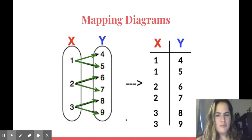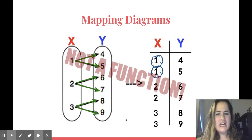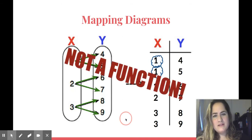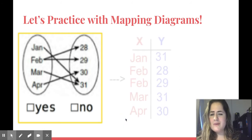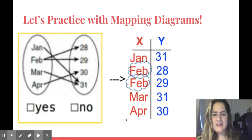So if the rule is X can't repeat, if I have two arrows coming out of X, that means it's not a function. X repeats. Let's practice again. I have a mapping diagram with months instead of numbers. Same kind of thing. January goes with 31. February goes with 28 and 29. That means it repeats, not a function.